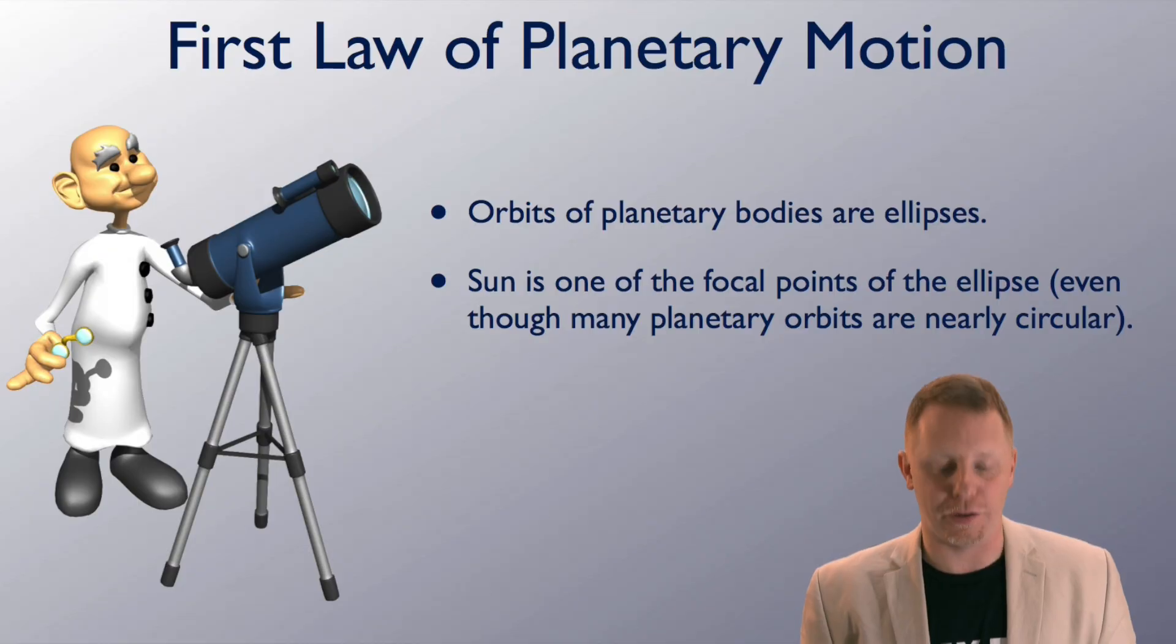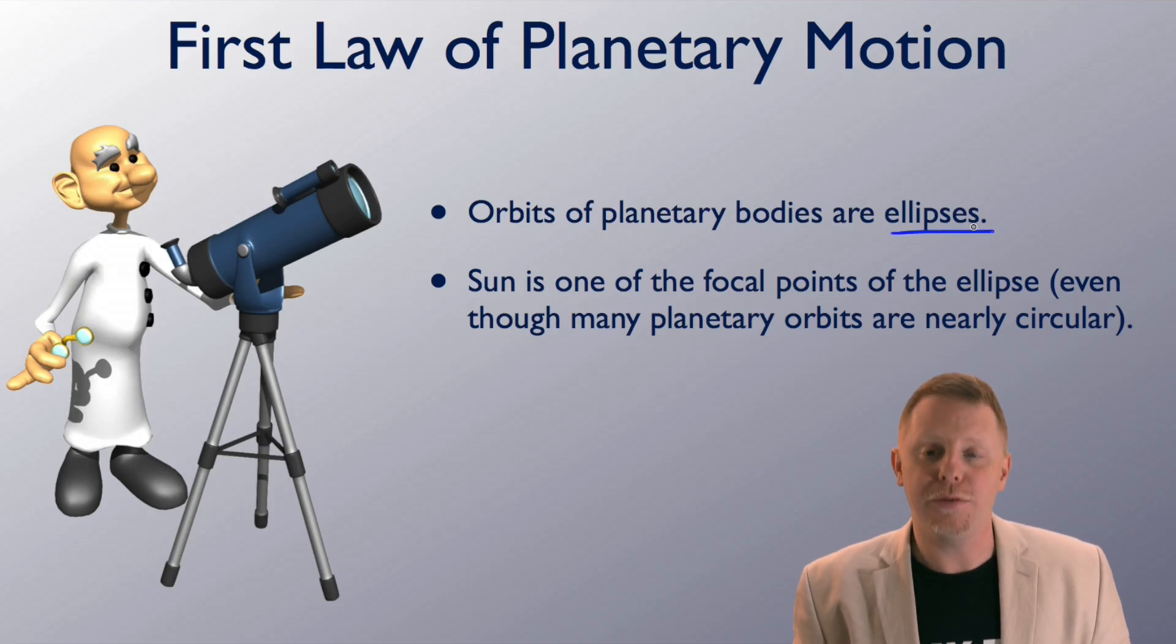Kepler's first law of planetary motion states that the orbits of planetary bodies are ellipses. The Sun is one of the focal points of the ellipse, even though many of the planetary orbits are awfully close to circles. Even in this lesson we're going to demonstrate them, draw them on the page, as if they are very elliptical. They're not very elliptical. They're pretty close to circles, just slightly off in their elliptical shapes.